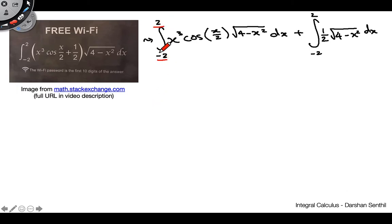But one thing we might notice here is that these bounds over here are symmetric. So we go from negative 2 to 2. And so if it turns out that this function here is an odd function, if this function here happens to be odd, this integral will actually just be 0.